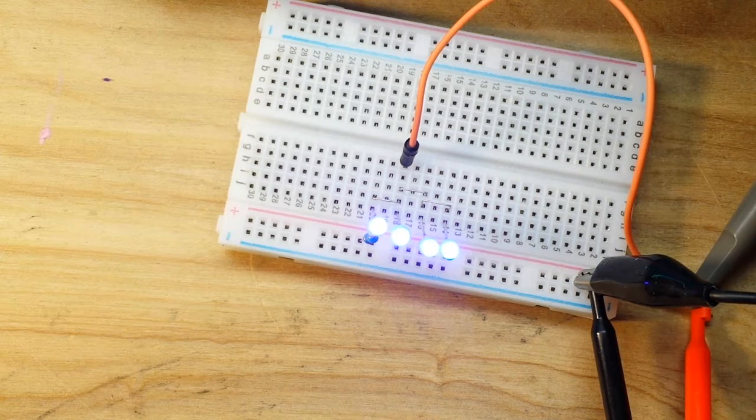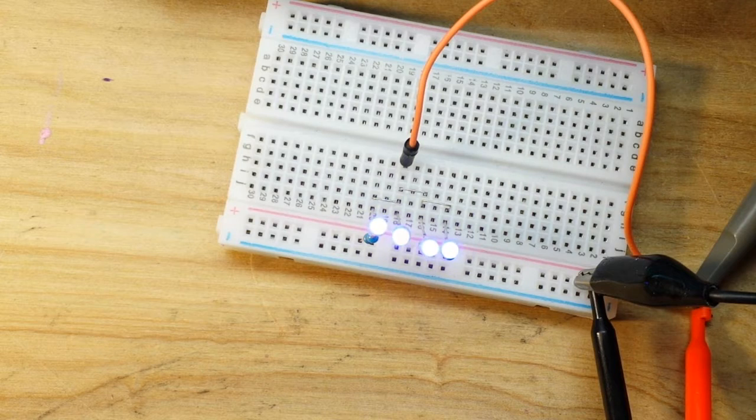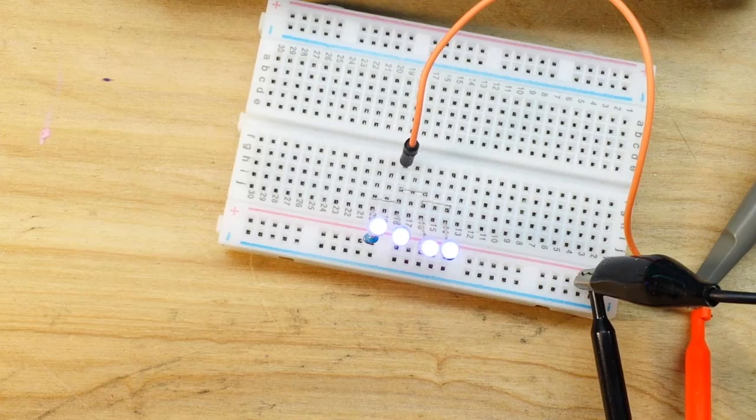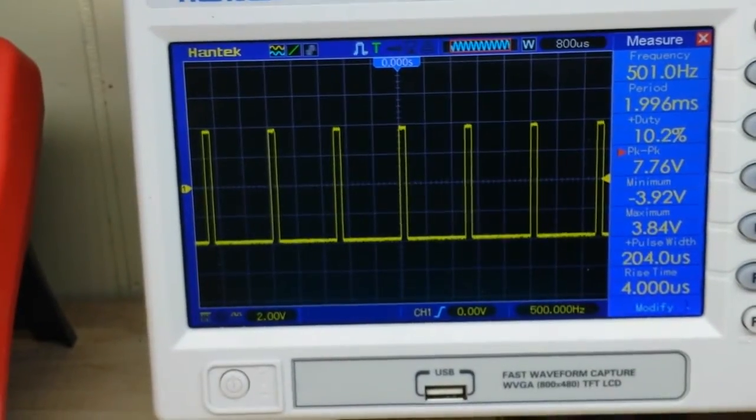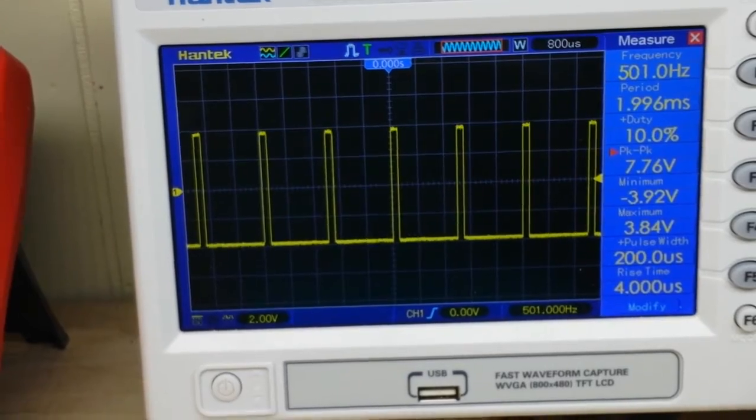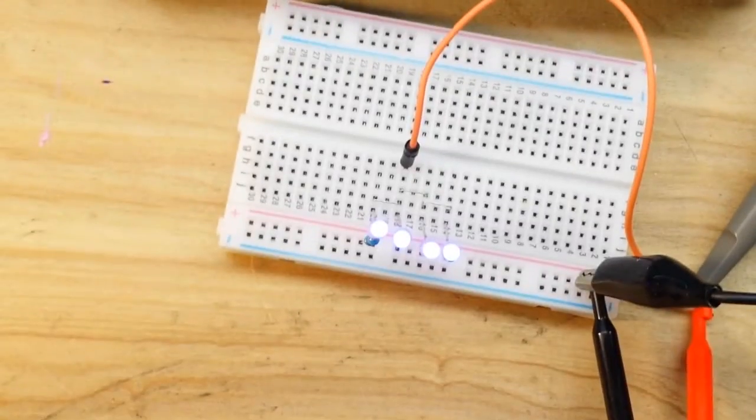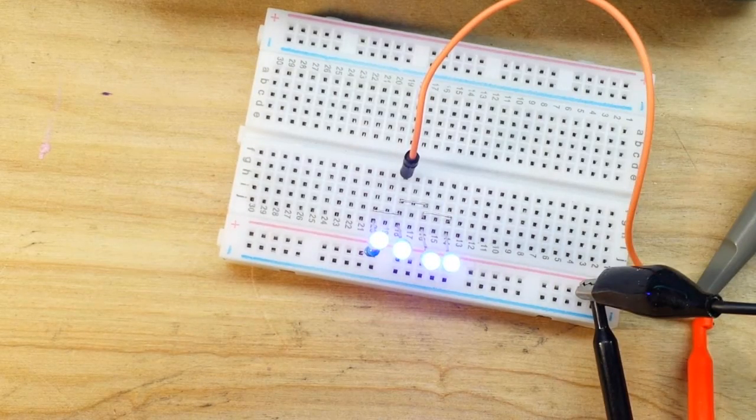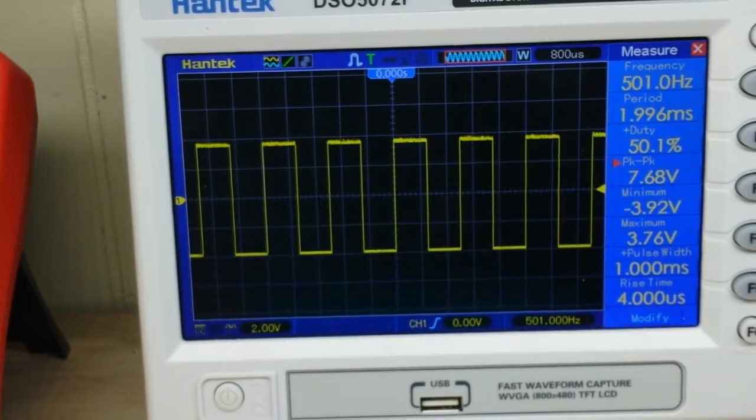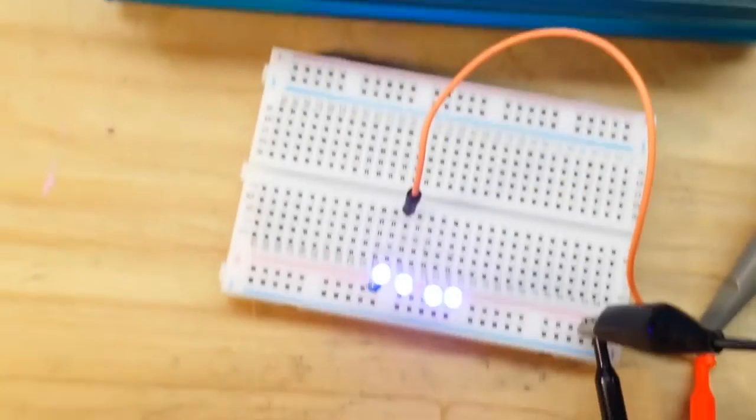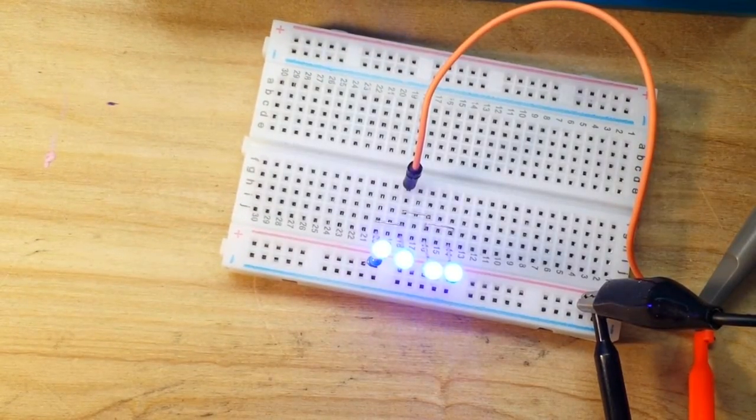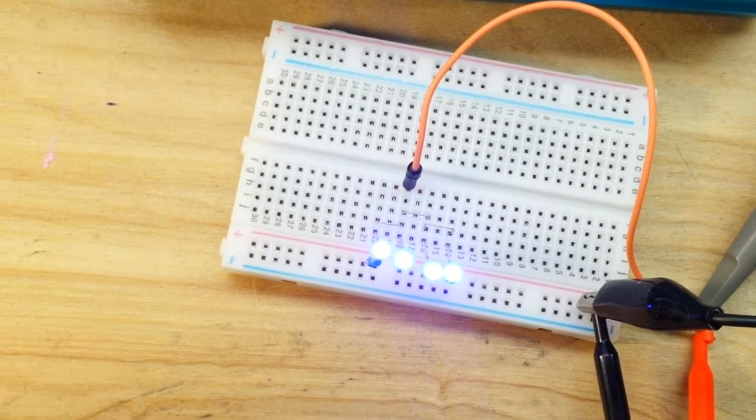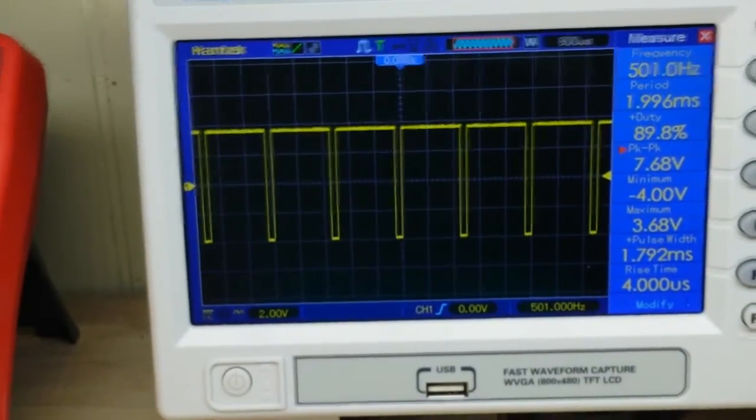Now what if I adjust the duty cycle down? What happens? Well you see how they've gotten much dimmer? If we look at our duty cycle here at 10% they are only on 10% of the time so they appear much dimmer. Now if I go up to 50% the LEDs are on half the time. That's our standard brightness and if I go up to 90% the LEDs appear to be much brighter.